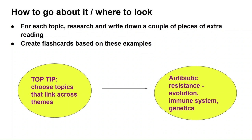Another top tip is to choose a topic for your extra reading that can link across multiple themes, because this will help make your essay synoptic. A good example is antibiotic resistance, because that covers the topics of evolution — antibiotic-resistant bacteria have a selective advantage, so they're more likely to survive and reproduce — the immune system, since antibiotic resistance has an impact on it, and genetics, because it's mutations that cause antibiotic resistance.